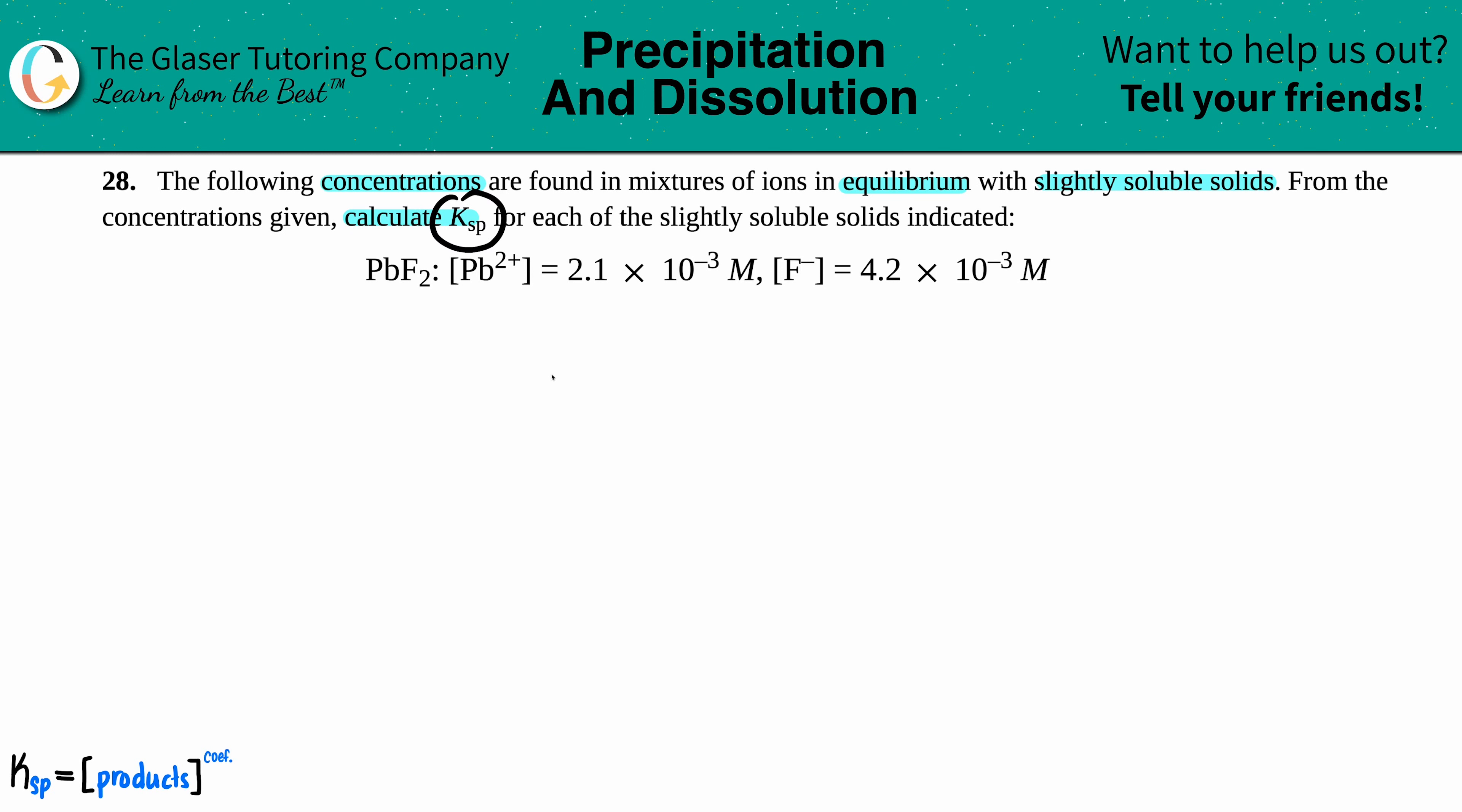Okay, so from these values we just have to calculate the Ksp. Now a Ksp, the solubility product, has to be found from a balanced equation. So with all Ksps, you're always going to take your slightly soluble solid—it's a solid—and we're going to dissolve it into its two ions. Look, they told us what the ions are.